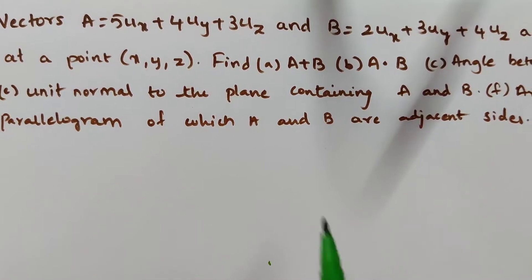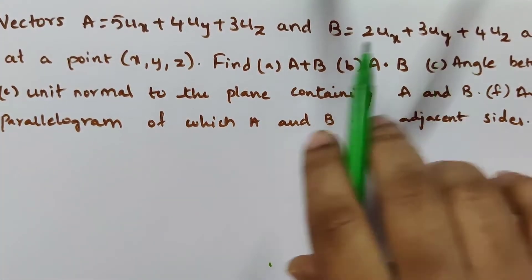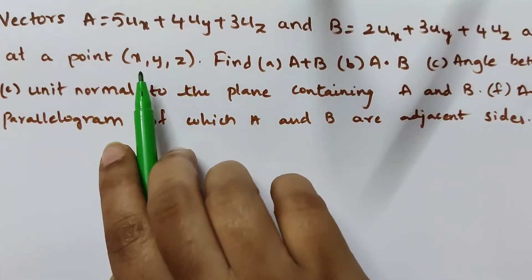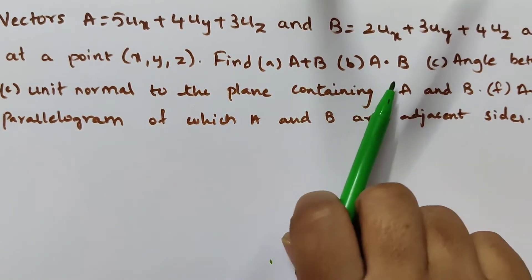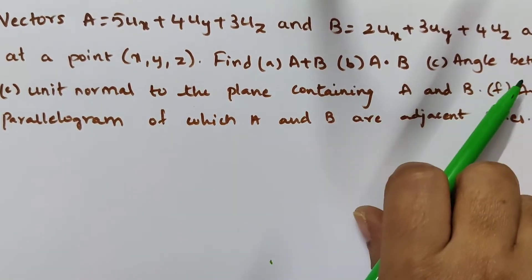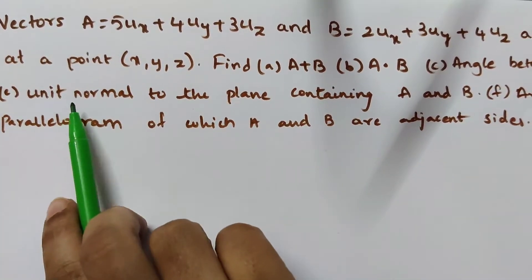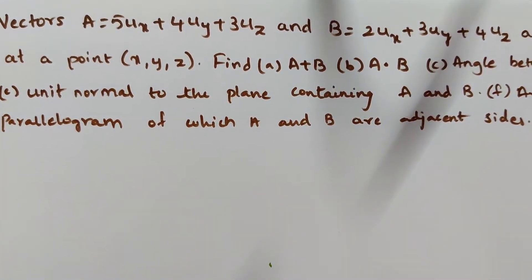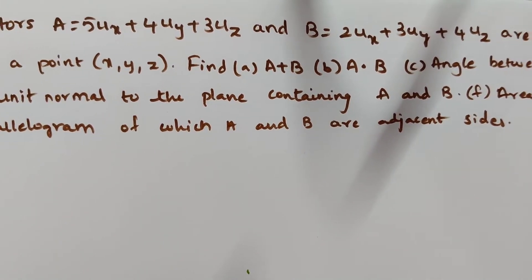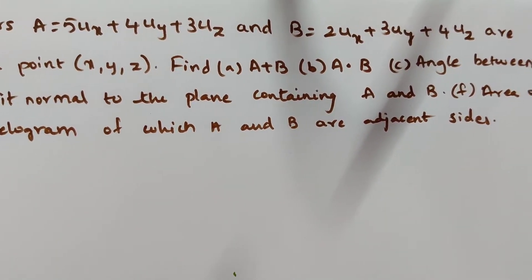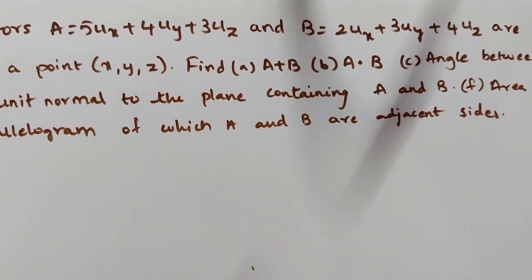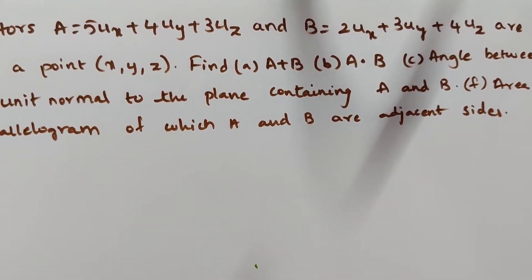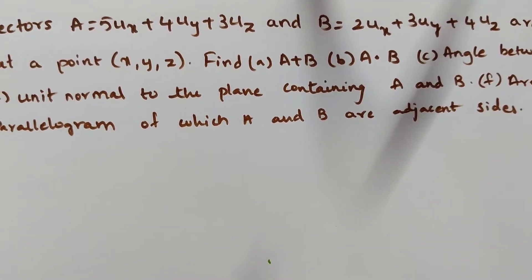Vectors A and B are given and situated at point XYZ. We are asked to find: A plus B, A dot B, the angle between A and B, the unit normal to the plane containing A and B, and the area of the parallelogram of which A and B are adjacent sides.